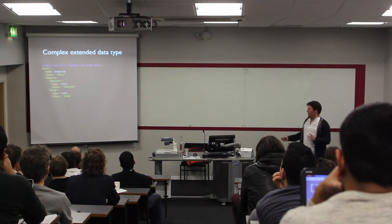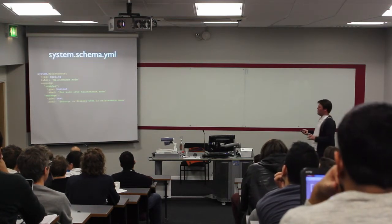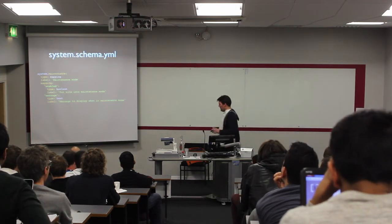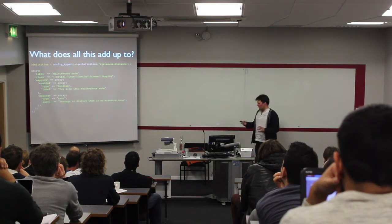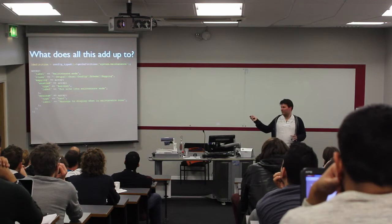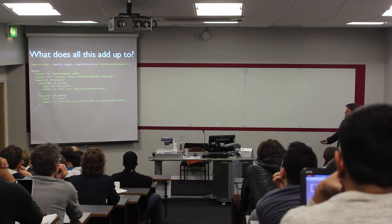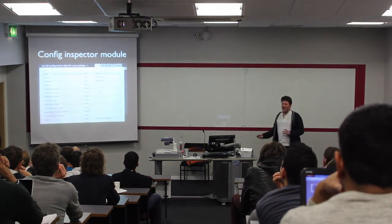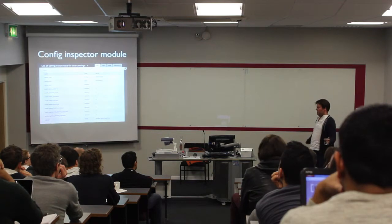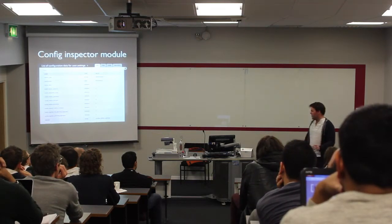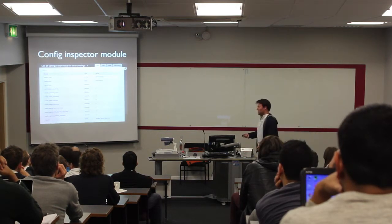Why bother creating this schema? Obviously for translation, but it buys us other things. I can use the config type function to find out what system.maintenance actually looks like and use that to validate any input — we can build really complex validation and checking functions with this. It also allows us to inspect our config and know if it's valid. We're going to get to the point where, much like about:config in Firefox, you can see all of your config, manage it, have it validated — we can build this for Drupal. A lot of that will probably happen in Drupal 9.